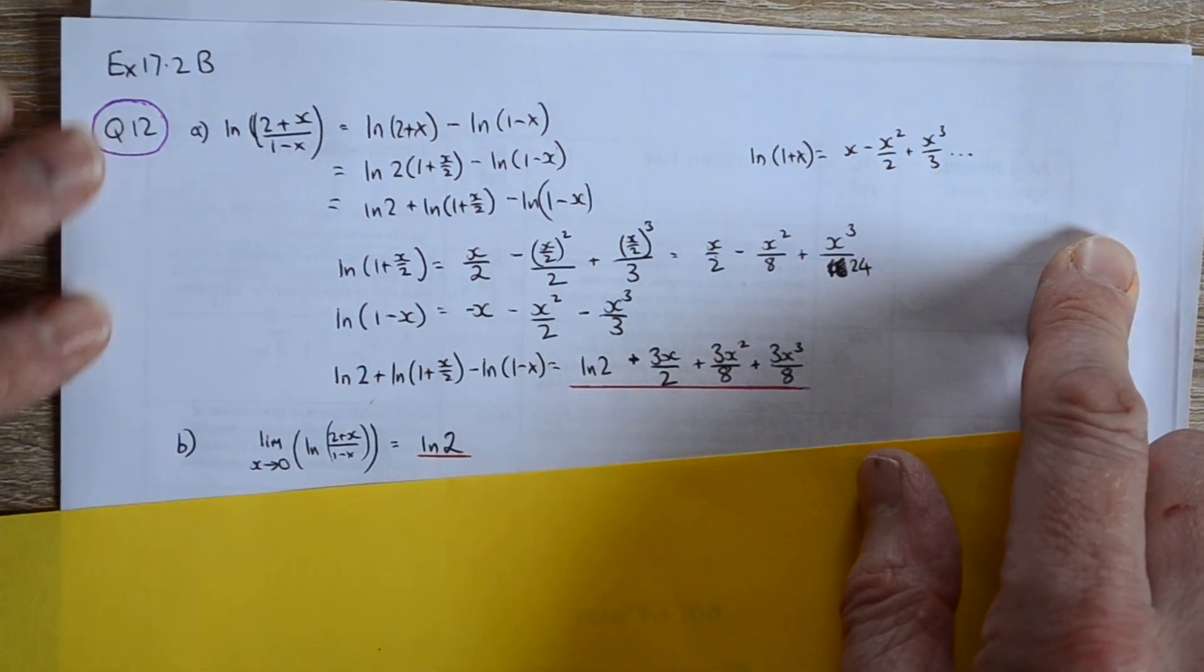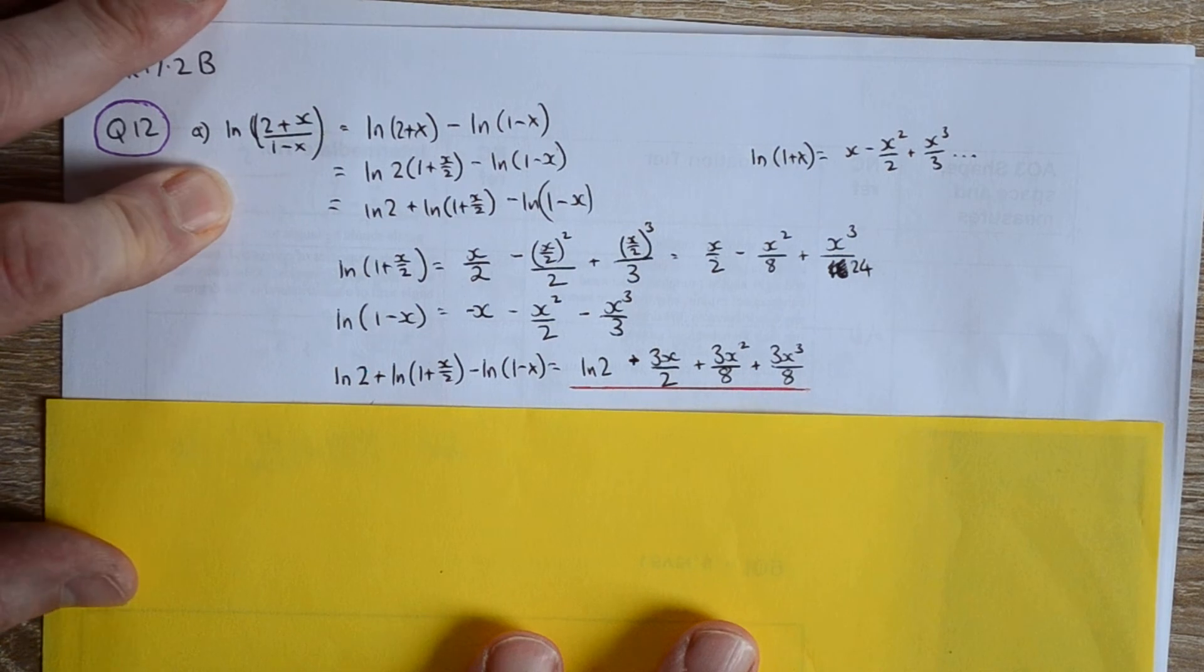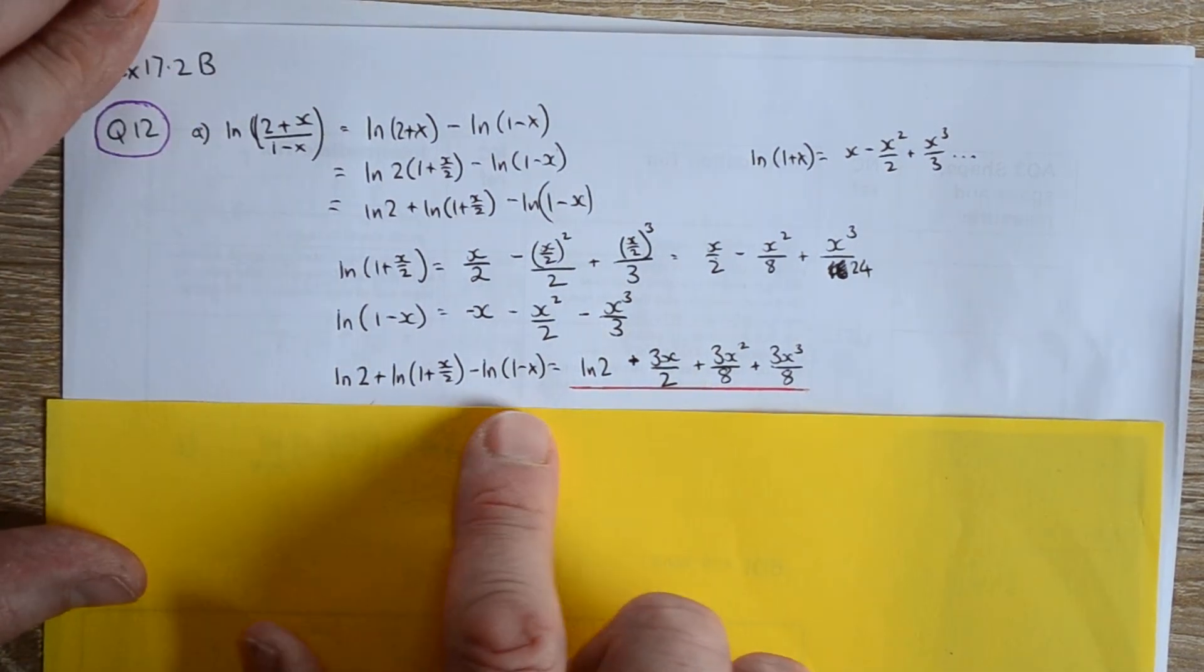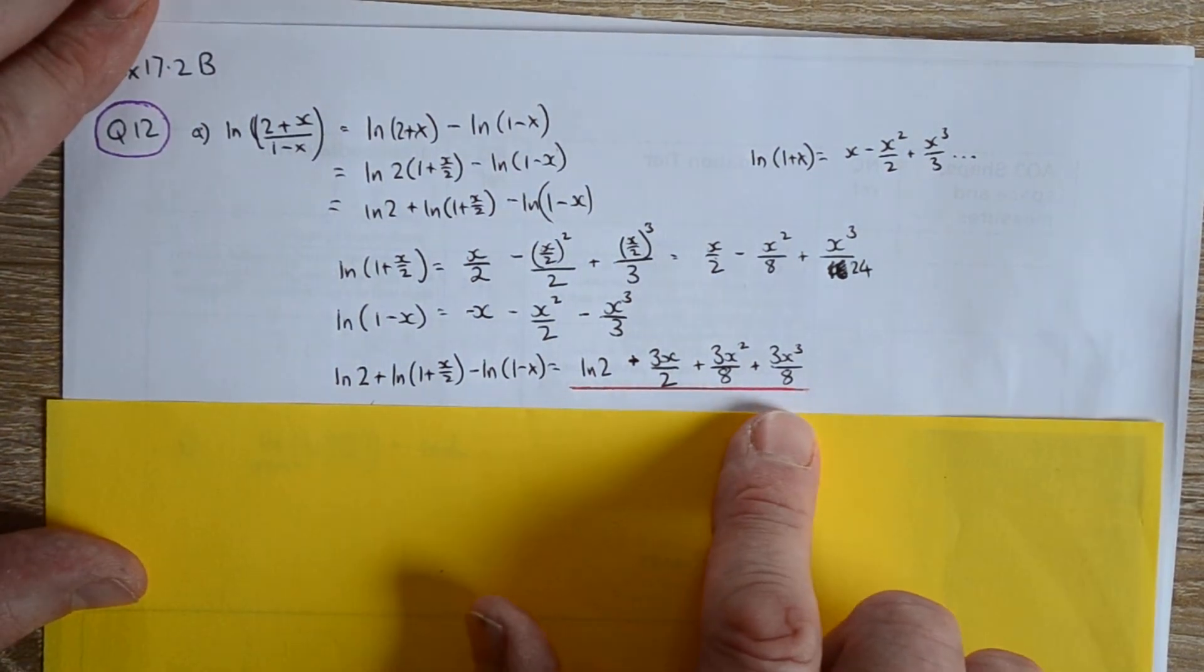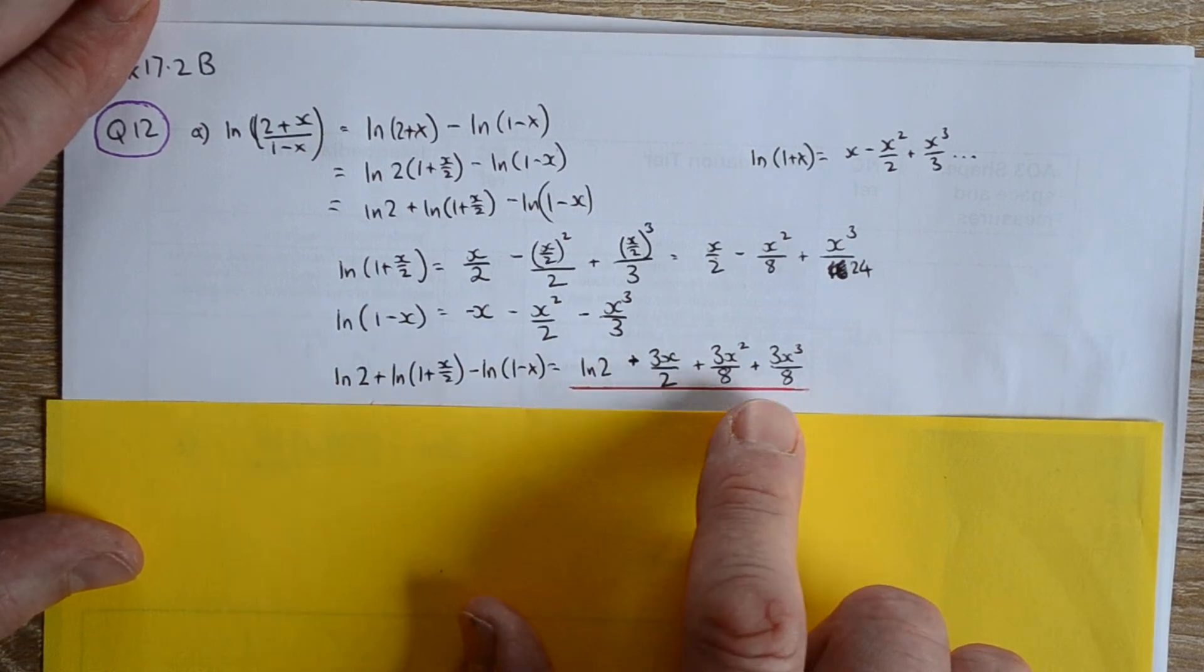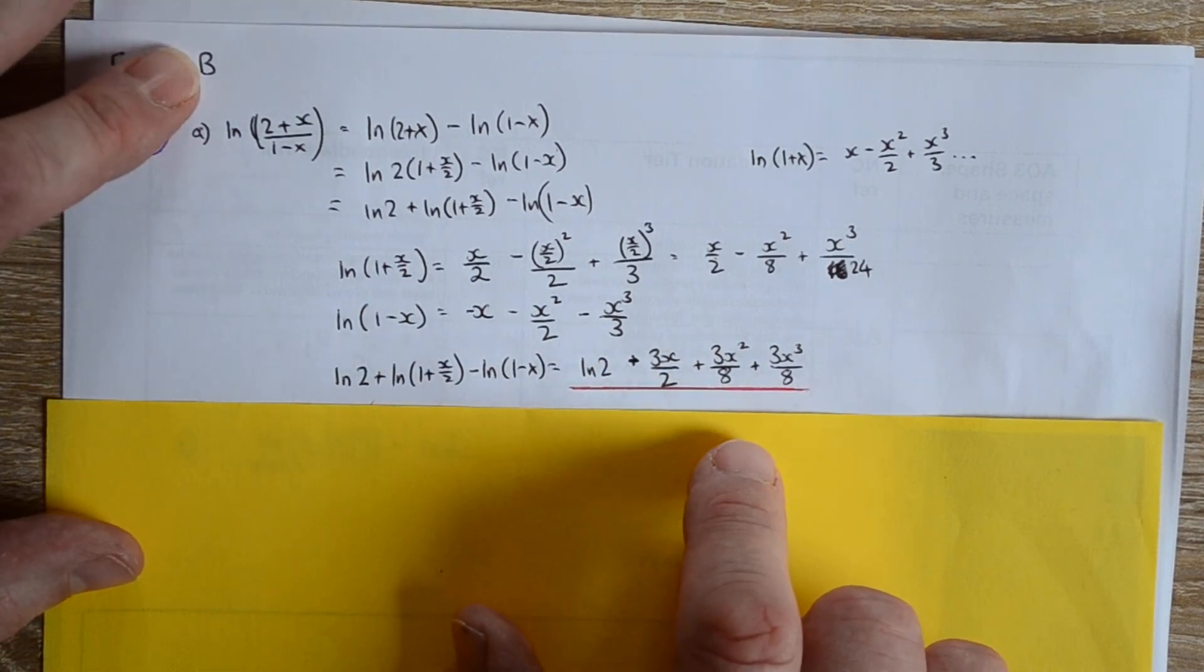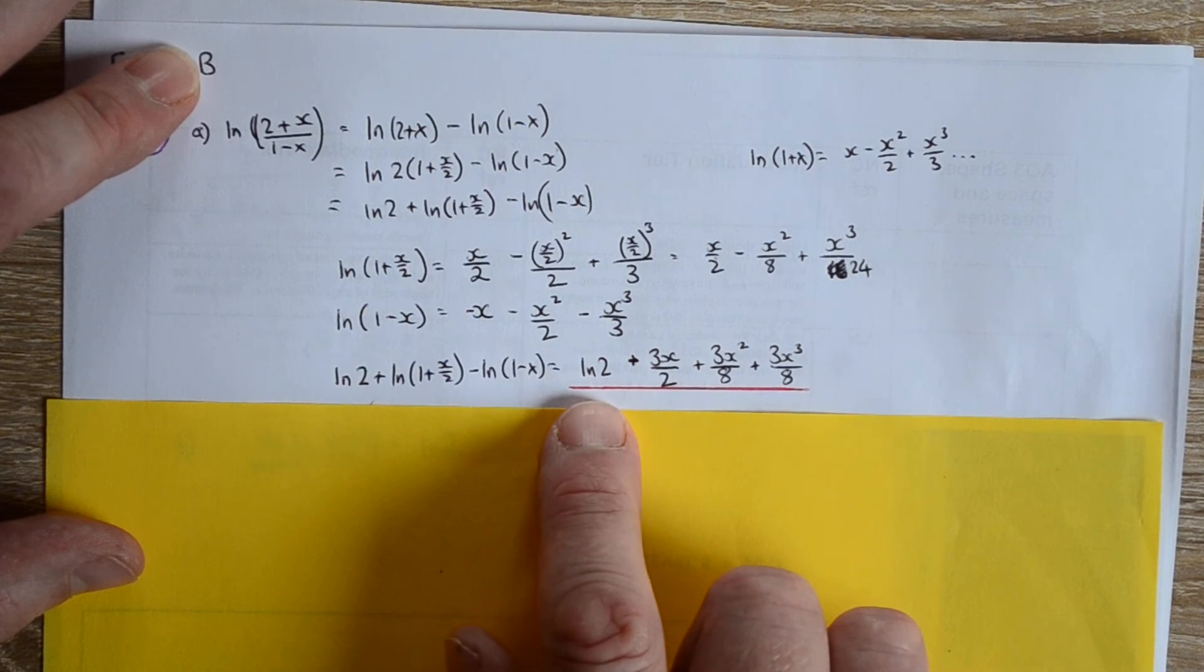We can then do our final piece of simplification, bringing them together, and this is what we get. Then if we sub in x equals 0 here, then all that will be left is ln 2.